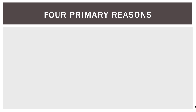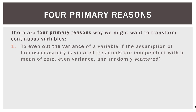There are four primary reasons we might transform variables in our model. Number one: to even out the variance of a variable if the assumption of homoscedasticity is violated. Homoscedasticity — the prefix homo means same, hetero means different — means sameness in residuals. That means residuals are independent with a mean of zero, have even variance across the values of X, and are randomly scattered.